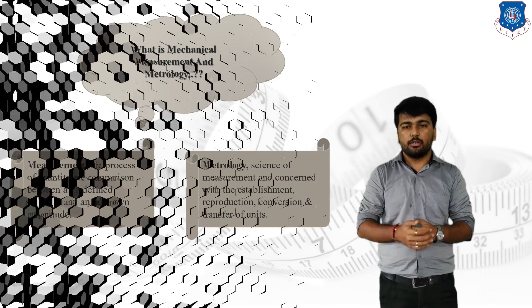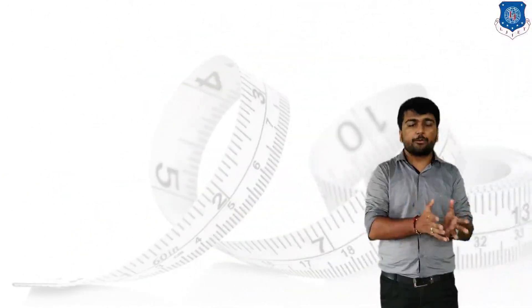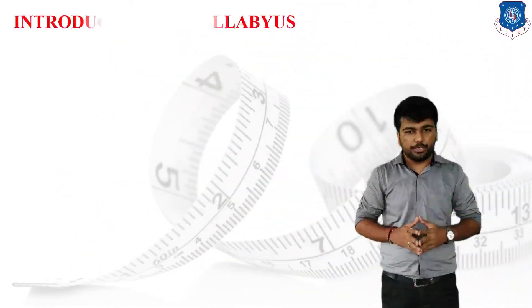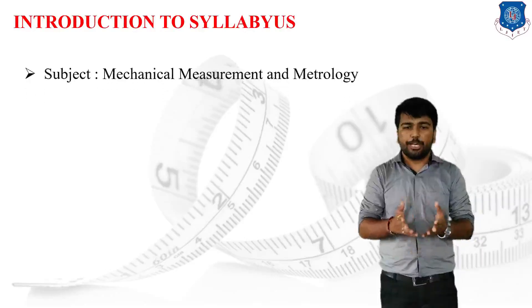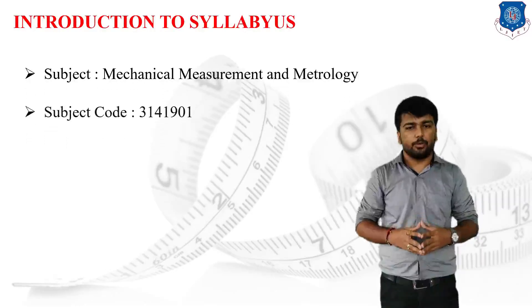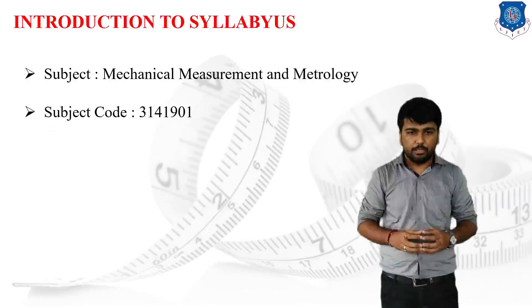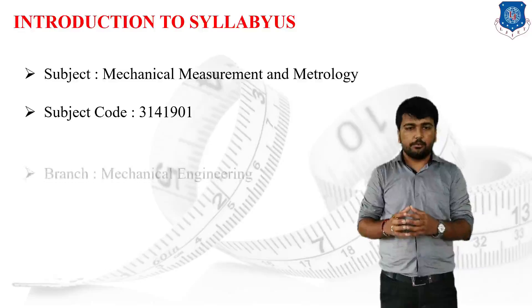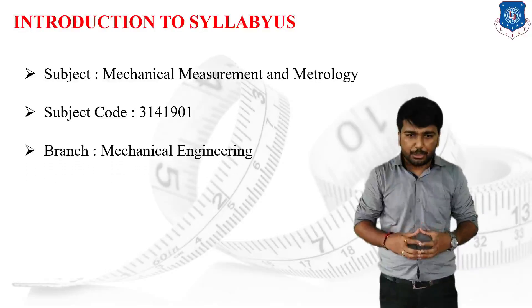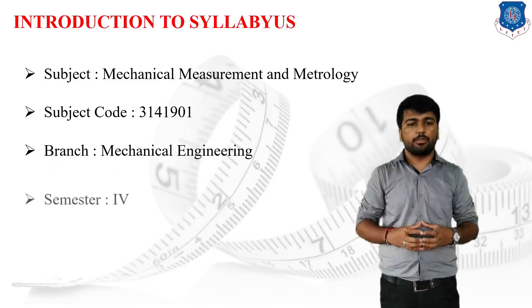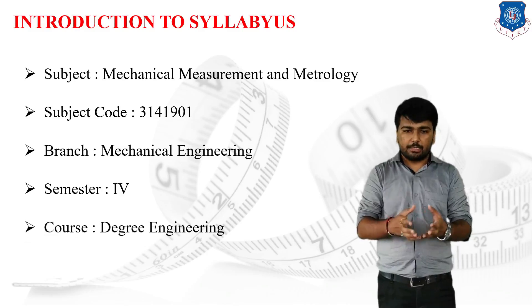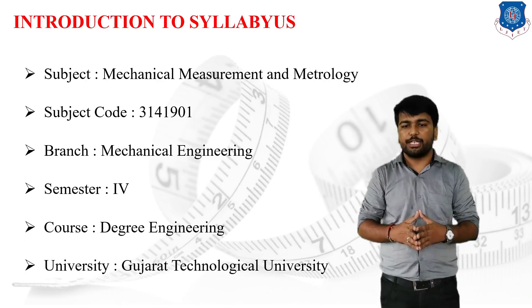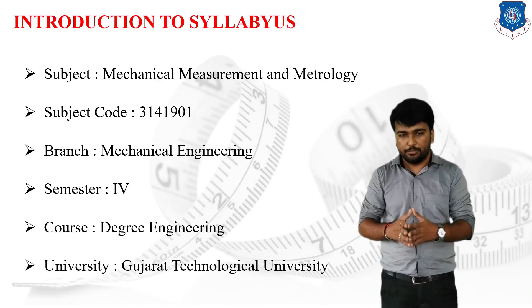The subject code provided by the university is 3141901, offered under the branch of Mechanical Engineering in the 4th semester. The university which provides this subject in the 4th semester is Gujarat Technological University.